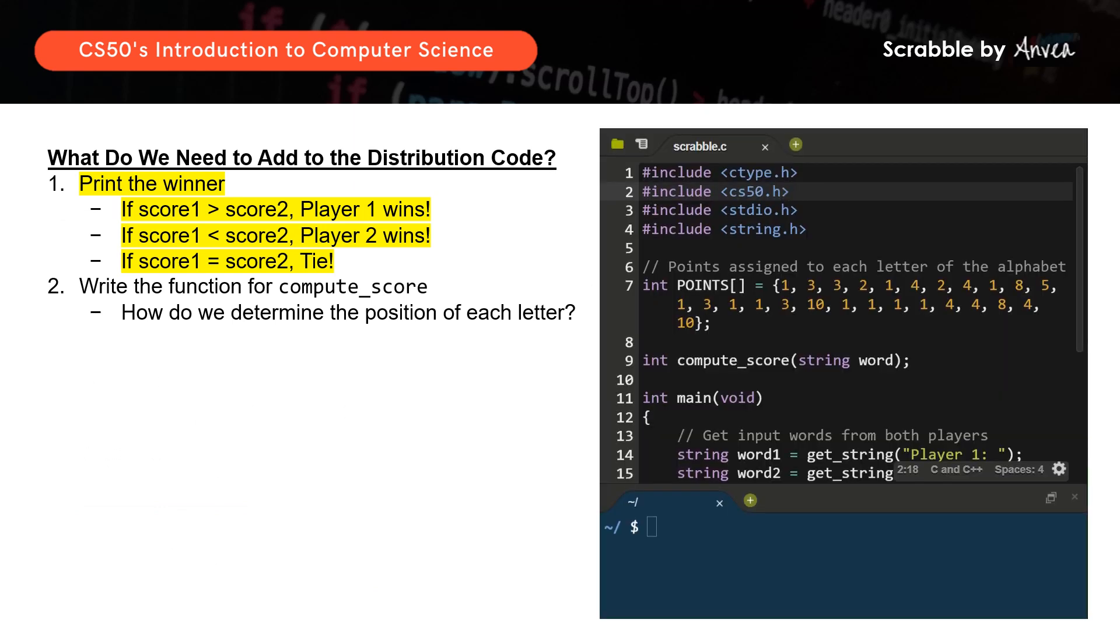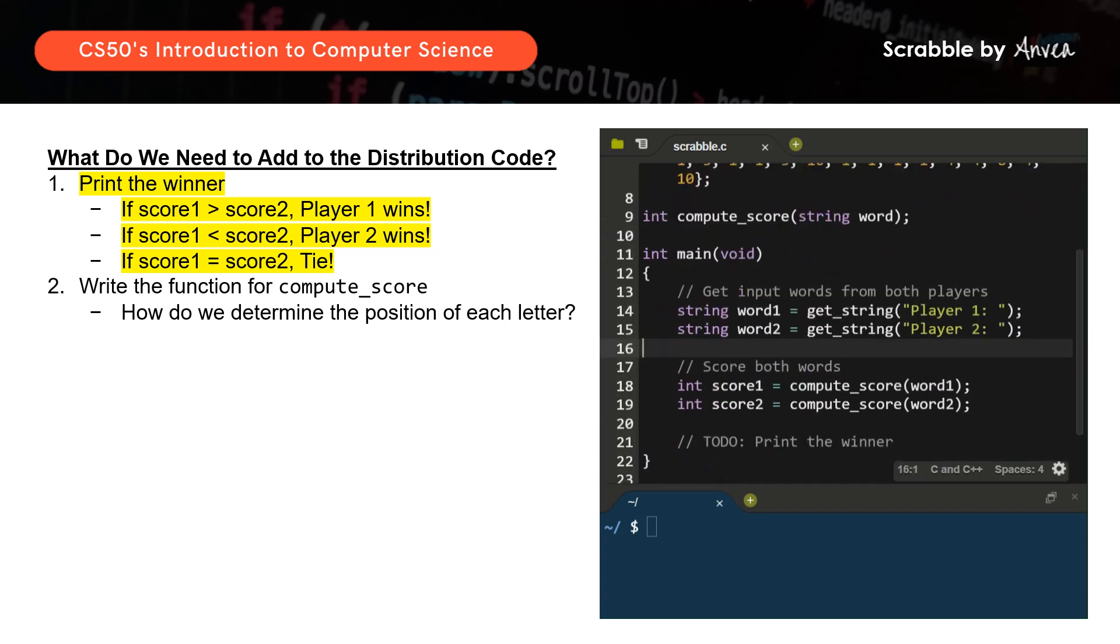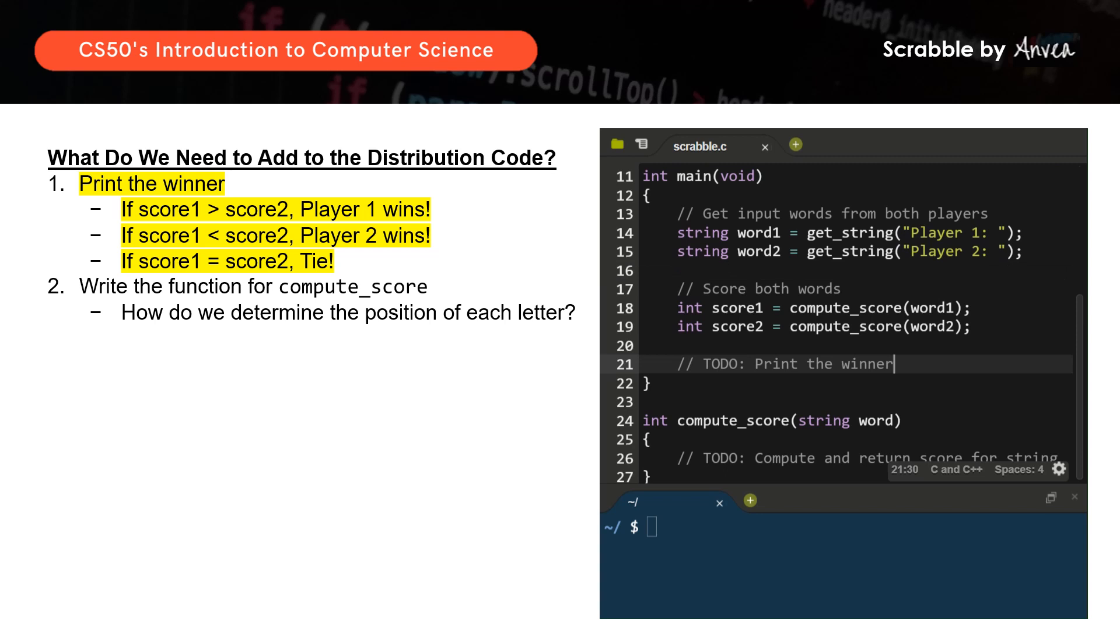So let's first start by printing the winner. So this is the distribution code that we have. So let's move on to the first part first, where we will write down how do we print the winner. So there's really 3 scenarios that we can have. So firstly, if score 1 is greater than score 2, or if score 1 is less than score 2, or if score 1 equals to score 2.